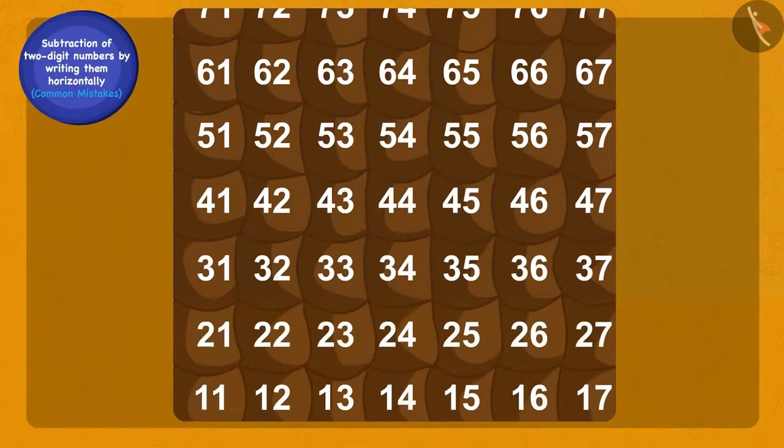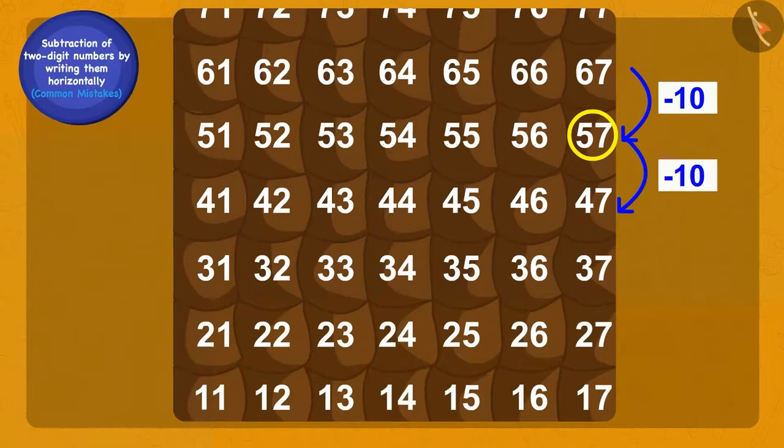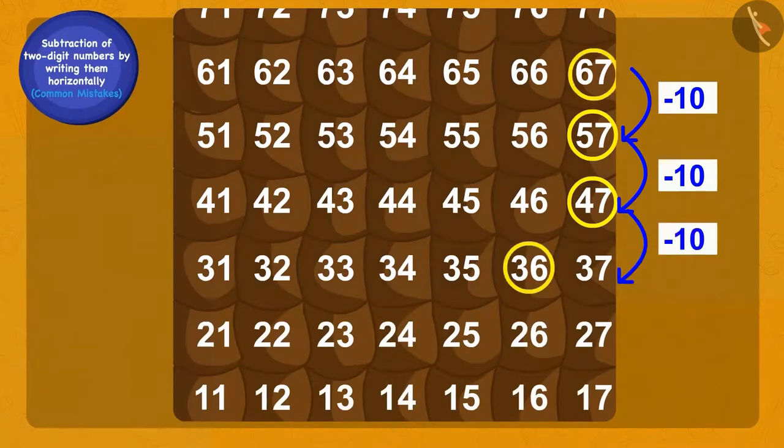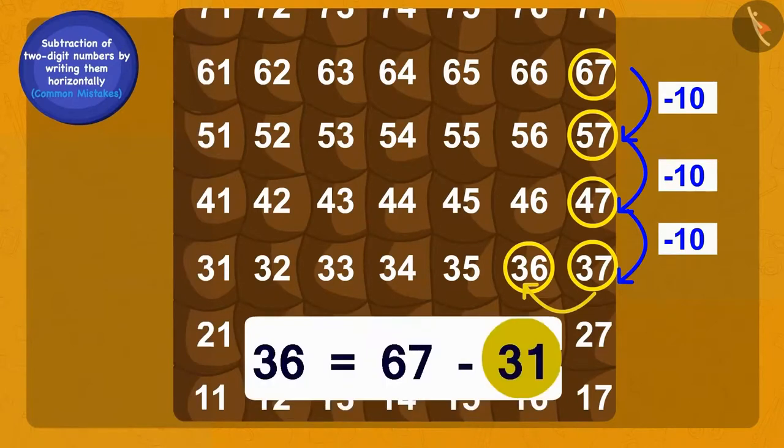Bola first took one jump down from 67 on the grid and thus by subtracting 10, he reached 57. Now, he made another jump down and then subtracting 10 again. So, which number did he reach? 47. Absolutely correct. Now, he finally took another jump and reached 37 on the grid. Children, now how will we reach 36 from 37? Yes, we have reached 36 by walking one step towards the left. In this way, using the grid, Bola went 31 steps back from 67 and reached 36.